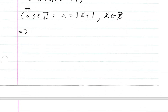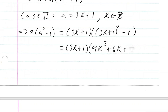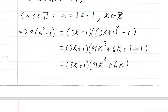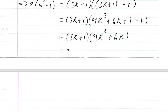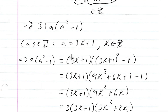This implies that A times A squared minus 1 equals (3K+1) times ((3K+1)² minus 1), which equals (3K+1) times (9K² + 6K + 1 minus 1), giving (3K+1) times (9K² + 6K). We can factor out a 3, giving 3 times (3K+1) times (3K² + 2K). So A times A squared minus 1 equals 3 times an integer, which means 3 divides A times A squared minus 1 when A is of the form 3K plus 1.